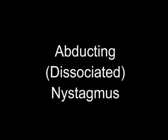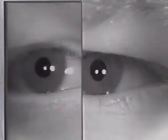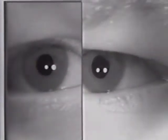AB ducting nystagmus are a variety of dissociated nystagmus, usually seen as part of an internuclear ophthalmoplegia.